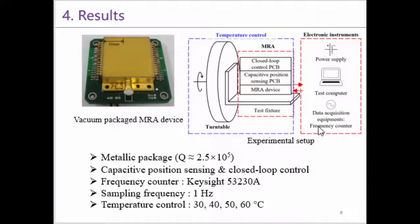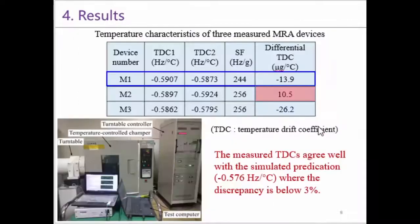The experimental setup is shown in this figure. The circuits include capacitive position sensing and closed-loop control. The output signal was measured by frequency counters. And the sampling frequency is 1 Hz. The prototype was tested at four constant temperatures: 30, 40, 50, and 60 degrees Celsius. This is a photo of the test equipment. This is a turntable. This is the temperature controlled chamber.